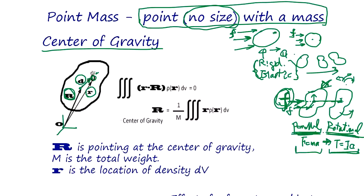Suppose gravity is acting on this material — there is a density, this is the volume, and the distance d is going to be the moment arm. This arm is actually torque, and you integrate within this material to get the entire torque. This torque being zero means there's no rotation, and that's the condition to find R. So we have to solve this equation.